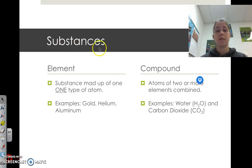So we're going to start with substances. Substances, like I said, can be an element. An element is a substance made up of only one type of atom. Examples of substances would be pure gold, pure helium, pure aluminum.